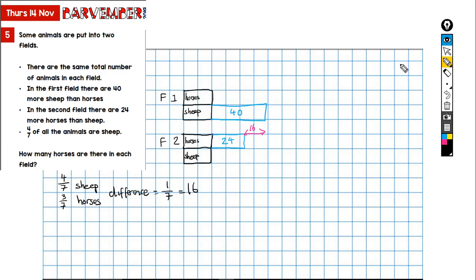All together, so if I do 16 times 7 for seven-sevenths, okay, so that's 42, all right, and that's going to give me 112. All right, so the total number of animals, okay, let's do this, the total number of animals in both fields is 112.